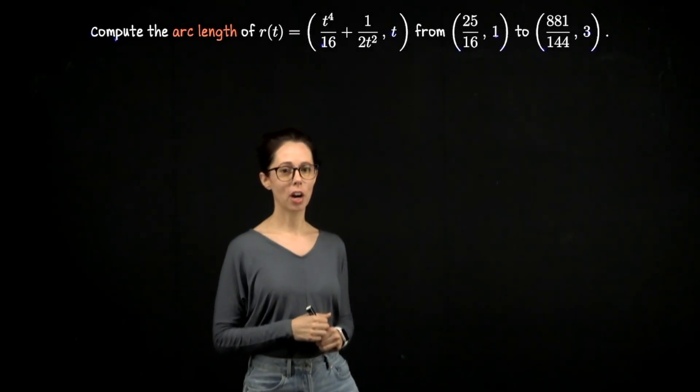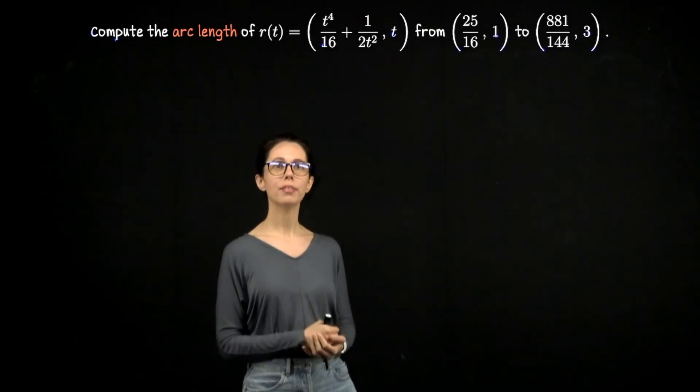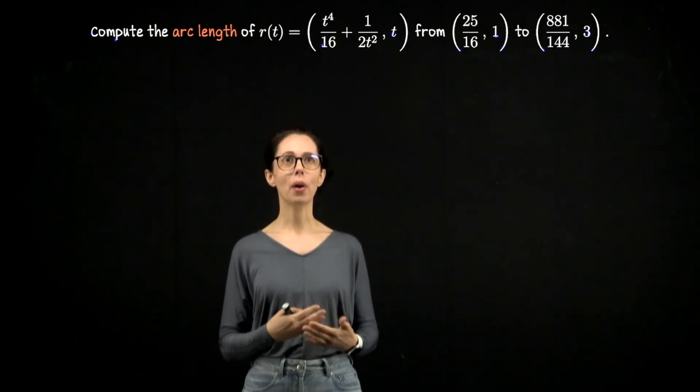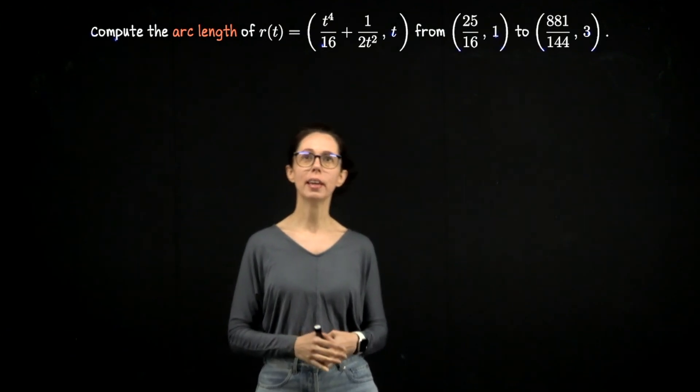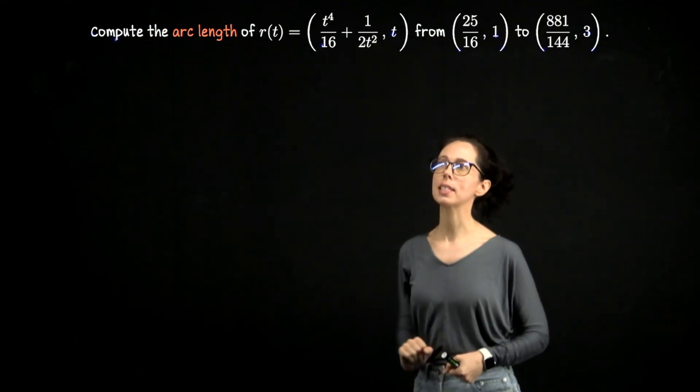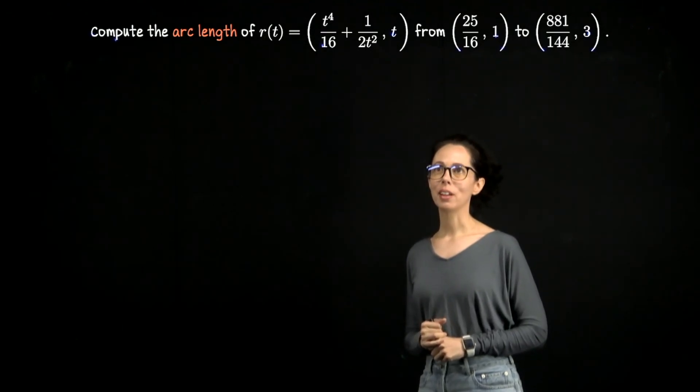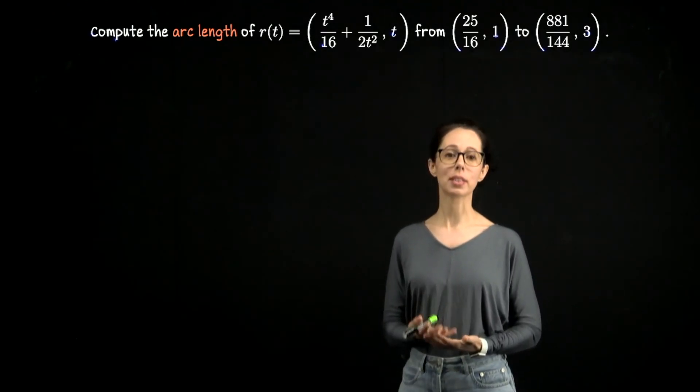In this video, I would like to do an example of an arc length computation for a parametric curve, where our x coordinate over time, x written with respect to the parameter t, is t to the fourth over 16 plus 1 over 2t squared, and y as a function of t is just y of t equals t.